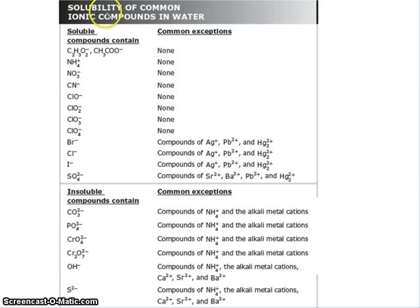This chart shows you the solubility of ionic compounds in water. It's divided into two sections. Above this line right here are the compounds that are typically soluble in water, meaning if we put a compound that has one of these ions in water, it will probably dissolve.